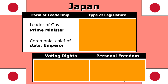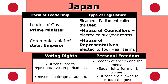The leader of the government is the prime minister, and the emperor is the ceremonial chief of state. Japan calls its parliament the Diet — Japanese for parliament. It's bicameral: there's a house of counselors elected to six-year terms, similar to our Senate, and a house of representatives proportionally elected to four-year terms. Japan has an outstanding track record on voting rights — women were able to vote from the beginning of their current constitution. You have universal suffrage, and you vote for your representatives in parliament, not directly for the prime minister. They have all standard personal freedoms, including equal rights for men and women written directly into their constitution.